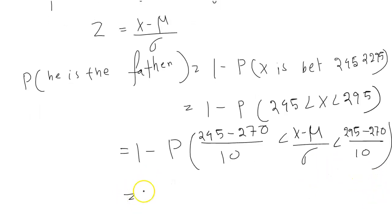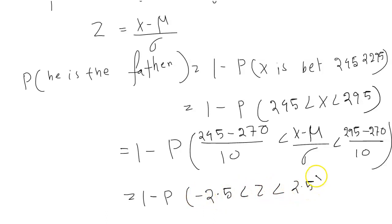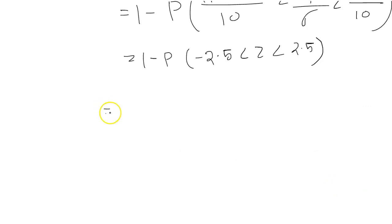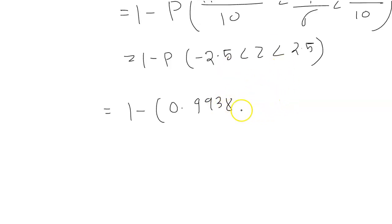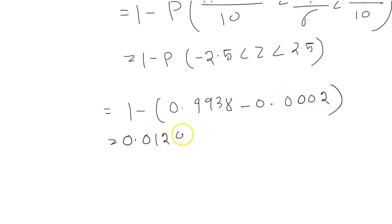So that is equal to 1 minus P, negative 2.5 less than z less than 2.5. Therefore, we will get 1 minus 0.9938 minus 0.0002, that is equal to 0.0124. So this is the answer. Thank you.